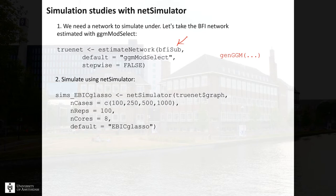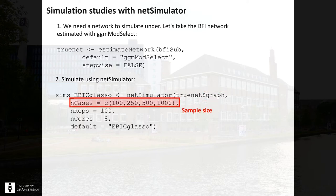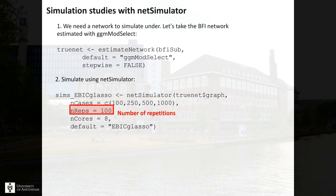Second, we put the true network structure we obtained into the net simulator function, and then we generate data under it. There are some arguments we can use: we set the sample size we want to simulate data under, and the number of repetitions — for every condition, we might want to repeat around 100 times to get a stable result.